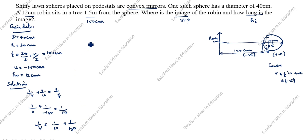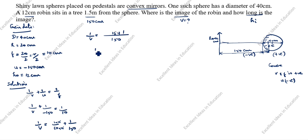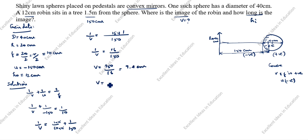Taking 150 as the common denominator: 1/v equals (15 + 1)/150, which gives 16/150. Therefore, v equals 150/16, which equals approximately 9.4 centimeters. Since v is positive, the image forms on this side — within the focal length at 9.4 centimeters.